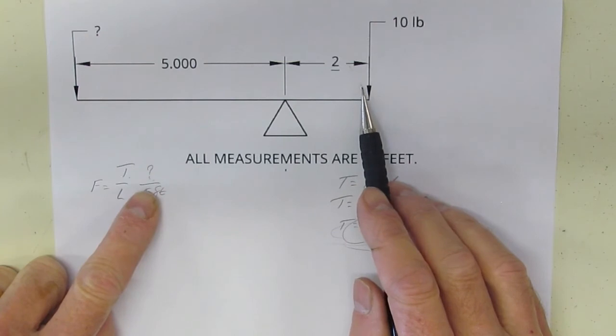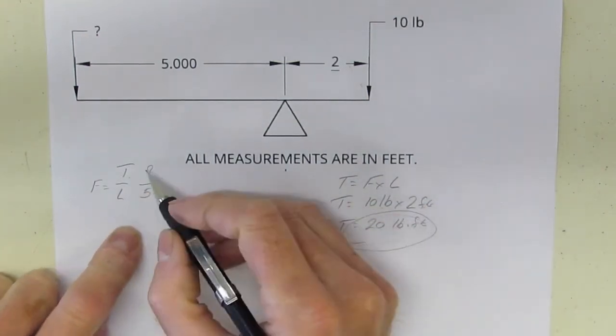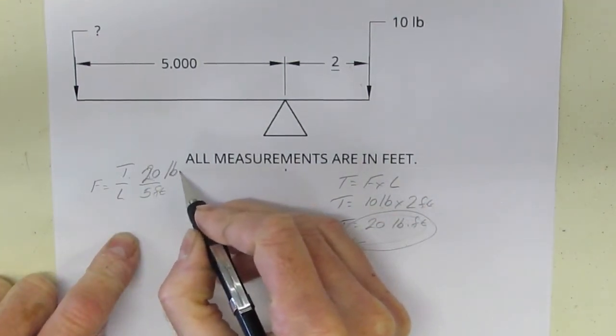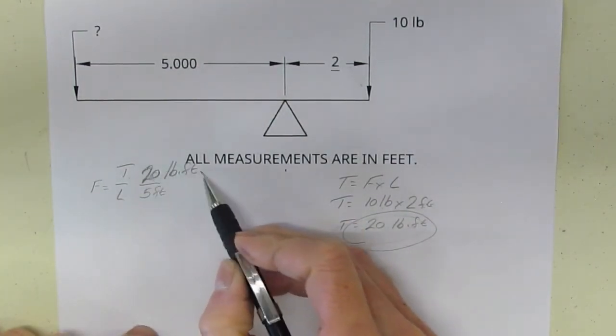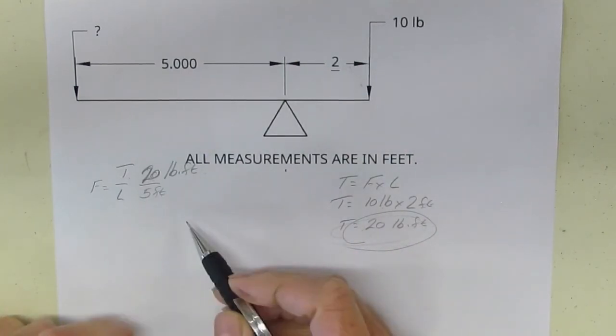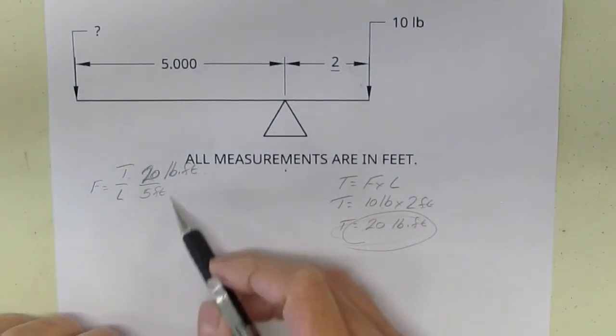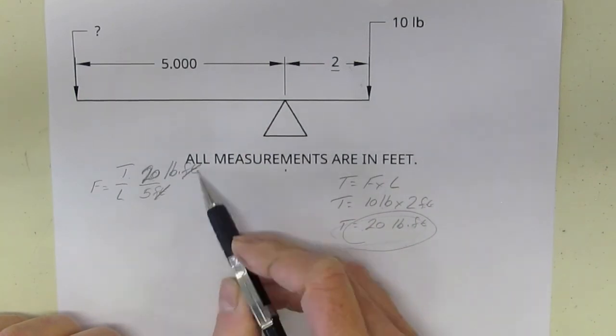So now I can suddenly fill this in. I can take that question mark and change it to 20 pound-feet. Again, I'm just using my six steps the whole throughout the whole process. So now 20 pound-feet divided by 5 feet. So my step four is: are my units good? Well, if I cross out feet and feet because they cancel because they're on top and on the bottom of the equation, I end up with pounds.